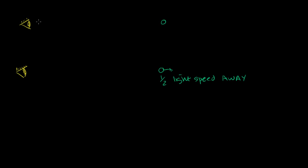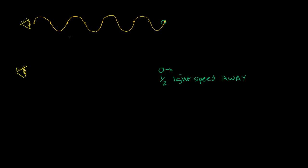After some period of time, the light wave from the stationary source reaches my eye and looks something like this. I'll draw a couple of wavelengths — half a wavelength, a full wavelength, another half, a full wavelength, another half, a full wavelength, and then a half and then a full wavelength. So it would look something like that as the actual waveform, with the front of the waveform just getting to my eye.